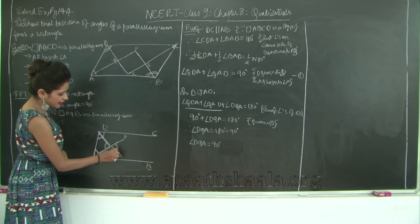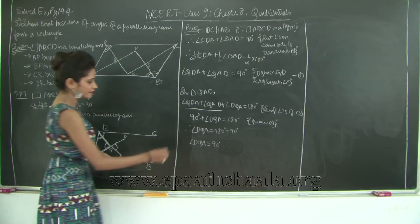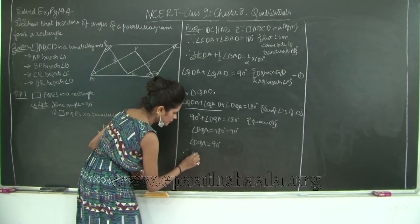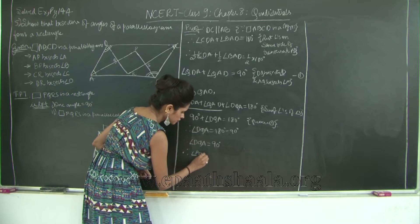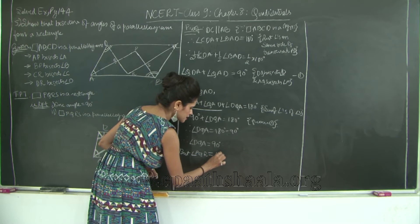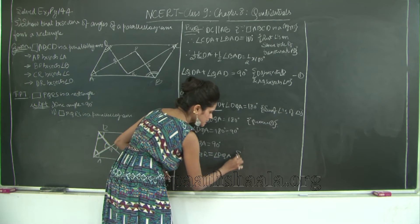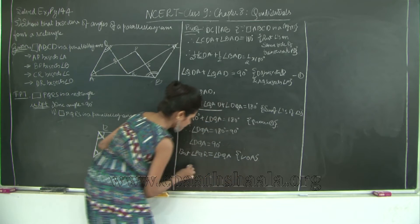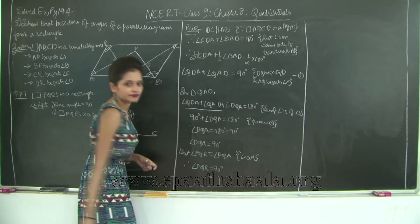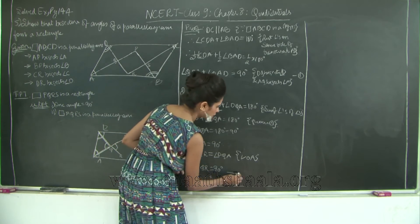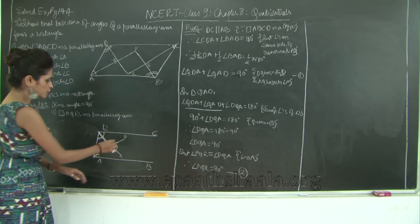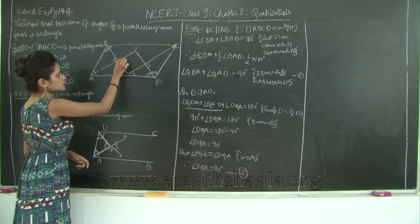Therefore angle PQR is 90 degrees, because this is the vertically opposite angle to angle DQA. Let us mark this as statement 2. So now we have proved that this one angle of PQRS is equal to 90 degrees.